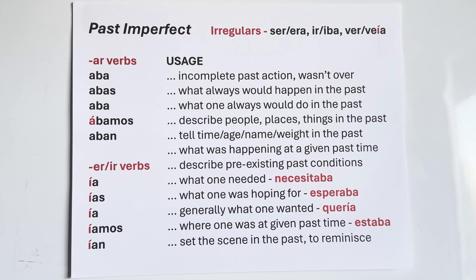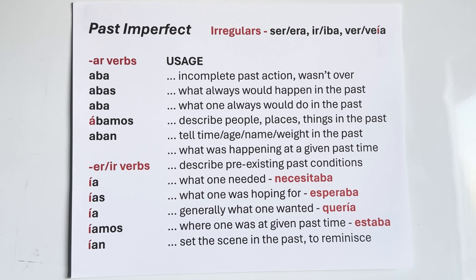The verb ser, the verb ir — to go — and ver — to see. Ser is era. You Taylor Swift fans, you Swifties out there, it goes like this: era, eras — like her tour — era, éramos, and eran. There's an accent on the E of éramos because it's a vowel stressed three vowels back — it breaks both rules and gets an accent mark. Like: éramos amigos — we were friends.